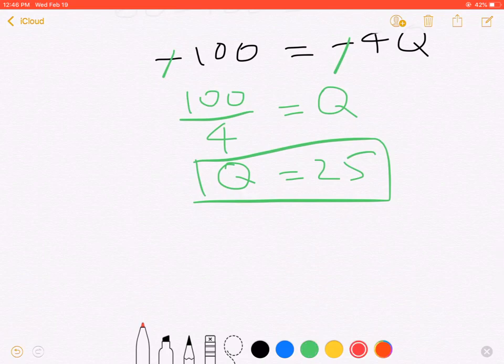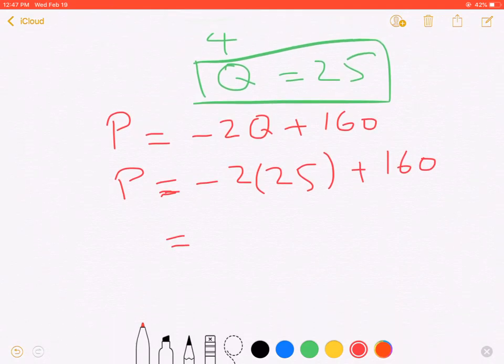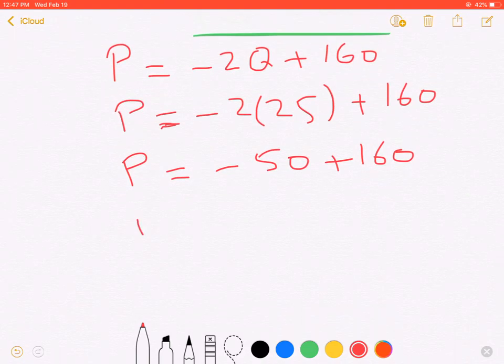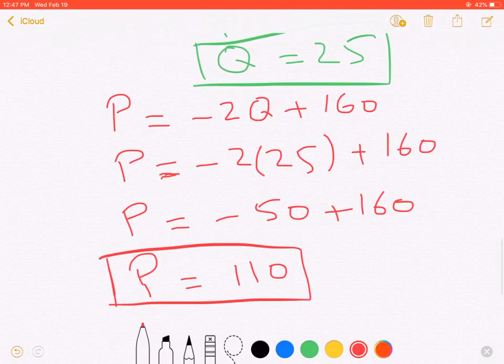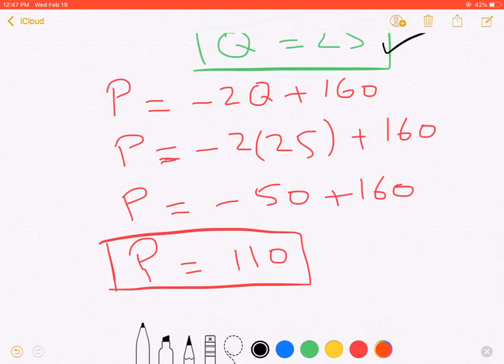Now if you recall your equation previously, it was P = -2Q + 160. Now I put in the value of Q, 25, here. So my P = -2 × 25 + 160. That turns out to be -50, 25 × 2 plus 160. So the P is equals to -50 + 160. And it gives you 110. So that's your objectives here. So the first objective was to find out the value of your Q which is 25. And the second one was to find out the value of P which is 110.